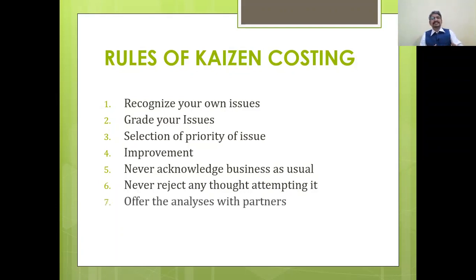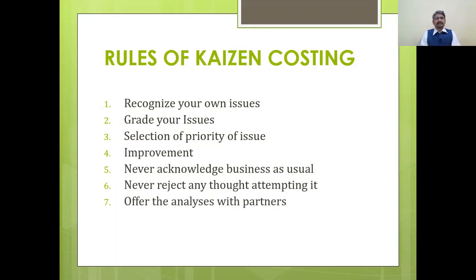Rule number seven is: offer the analysis with partners. Always work together with your employees. Keep the Kaizen model moving forward with collaborative, hand-in-hand effort.